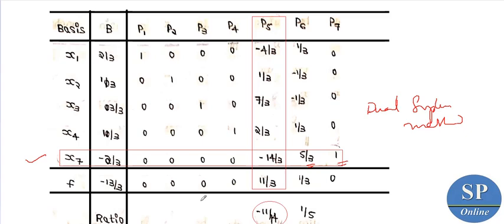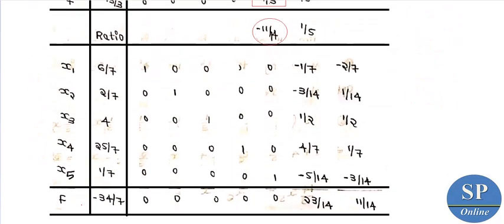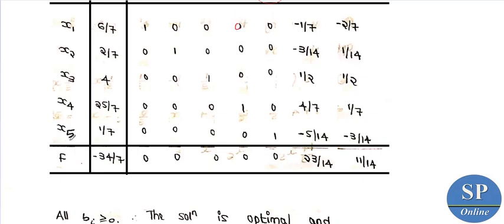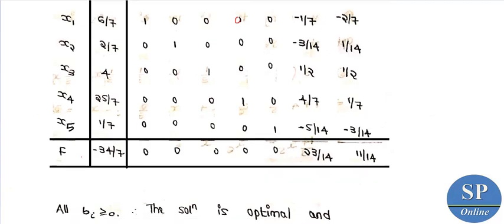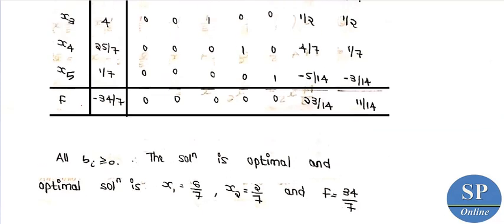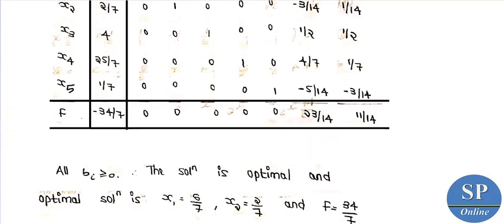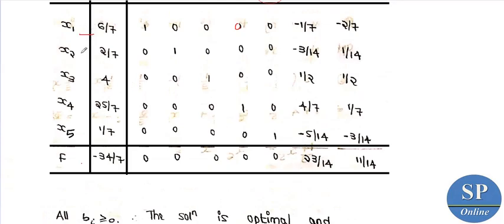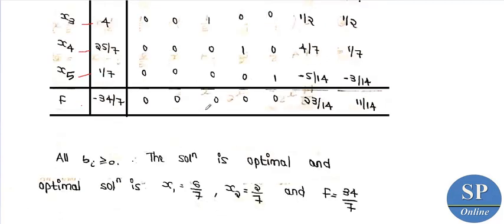So x7 is the outgoing variable and x5 is the incoming variable. After performing the next iteration, all b values are greater than or equal to 0, so the solution is optimal. The new optimal solution is: x1 equal to 6/7, x2 equal to 2/7, x3 equal to 4, x4 equal to 25/7, x5 equal to 1/7, and the value of f is 34/7.